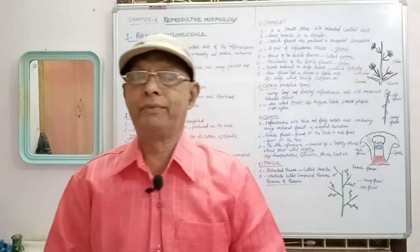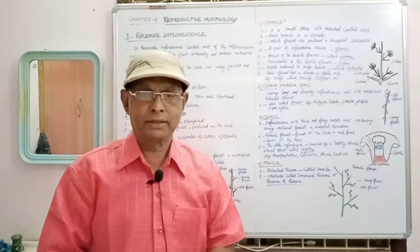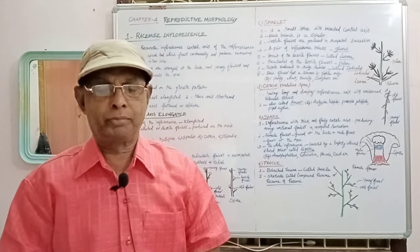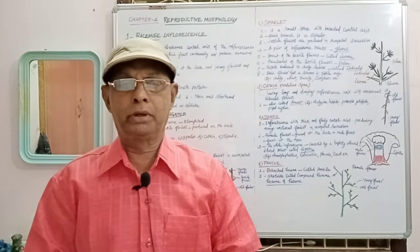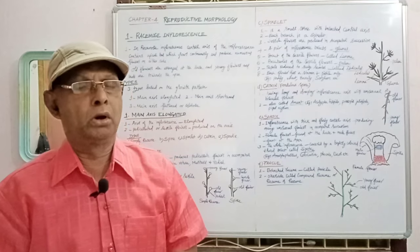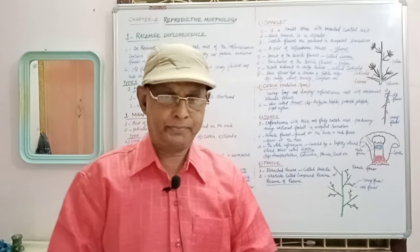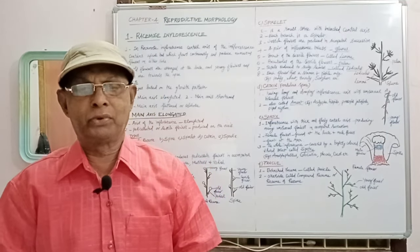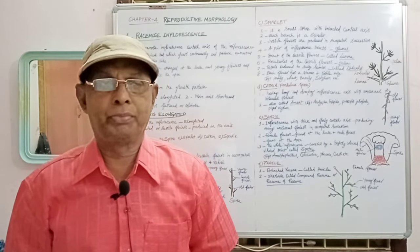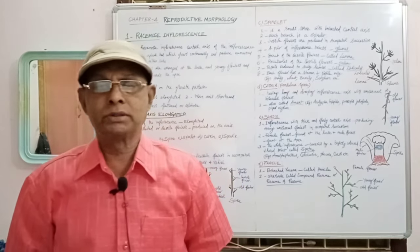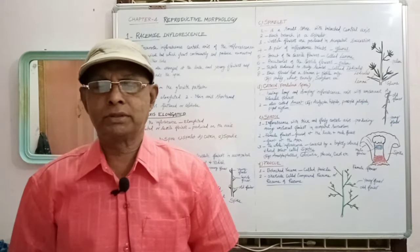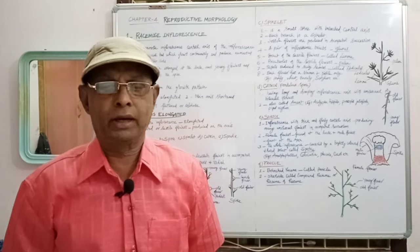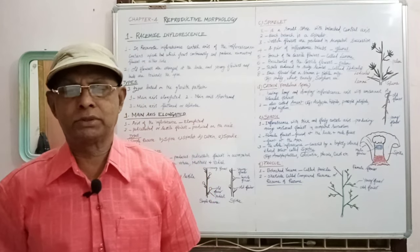In the racimose type of inflorescence, the inflorescence axis contains an apical bud at the top which grows continuously and produces numerous flowers on either side of the inflorescence axis. The arrangement of flowers is acropetal because the old flowers are arranged at the base of the inflorescence axis and the young flowers and buds are arranged at the apex.